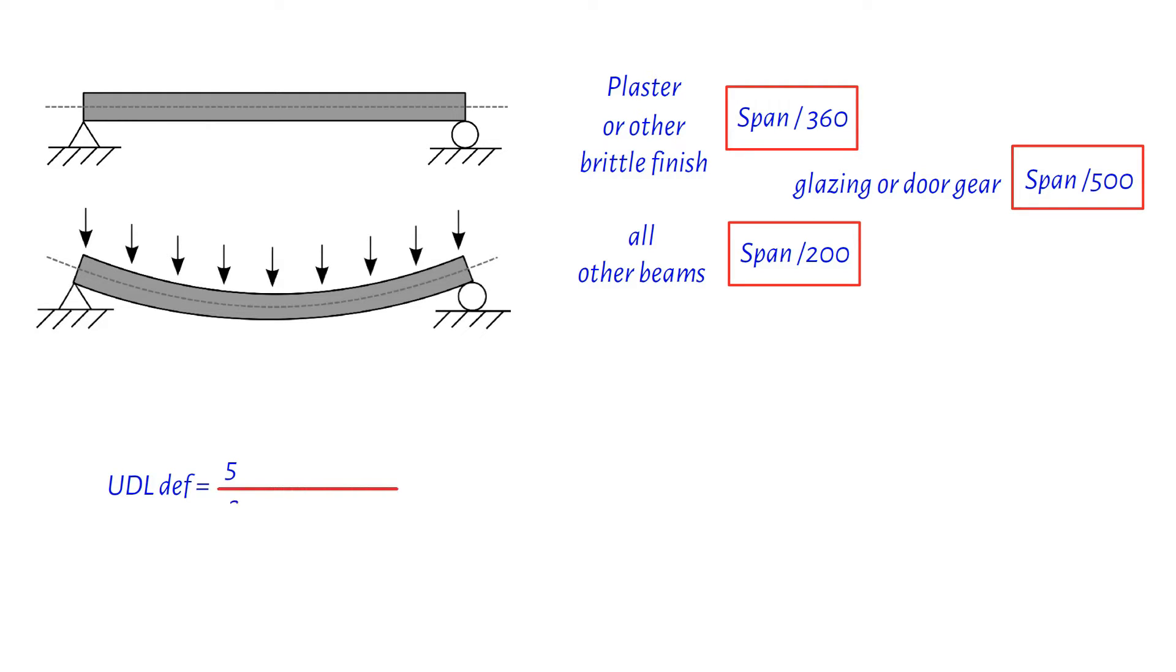take 5 divided by 384, multiply it by the weight in newtons, and then by the span cubed in millimeters. Divide all that by some constants, and you're good.